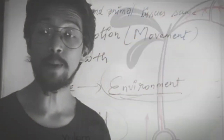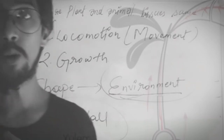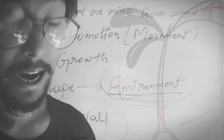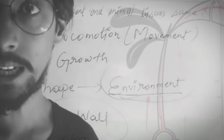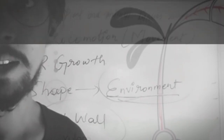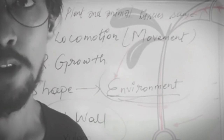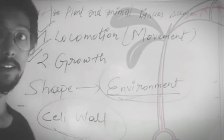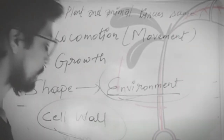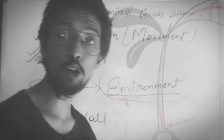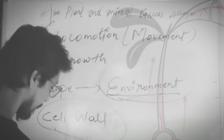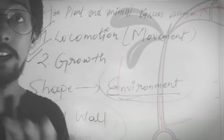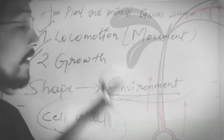The other name of meristematic tissue is dividing tissue. It is called dividing tissue because if any part gets broken or detached, it grows again. Any questions regarding the difference between plant and animal tissues?